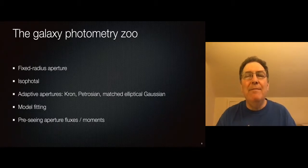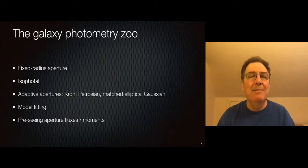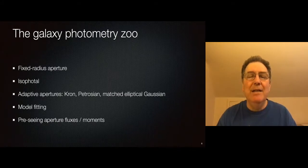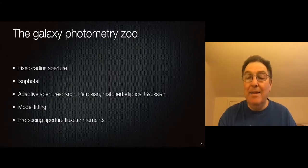There are five families of approaches I'll go over: fixed radius apertures, isophotal magnitudes, adaptive apertures which go by many different names, model fitting, and something unique — using pre-seeing aperture fluxes or moments, which is kind of unique to galaxies.